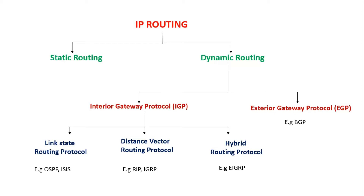Additionally, if there is any link failure, it's difficult to reroute the traffic when using static routing. The second method is dynamic routing, which is a method in which a router learns the network information automatically from the neighbor routers using routing protocols.